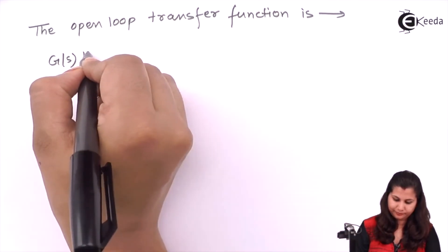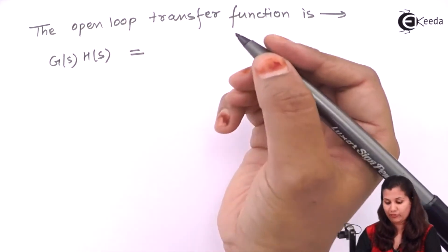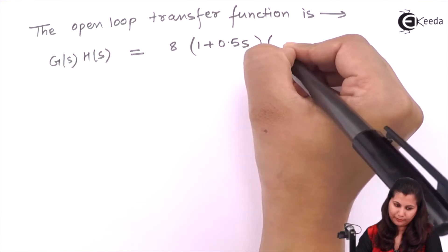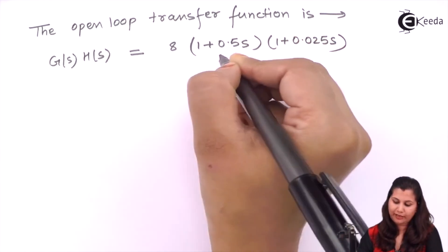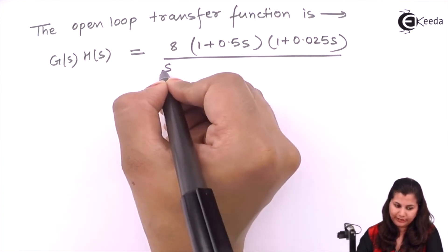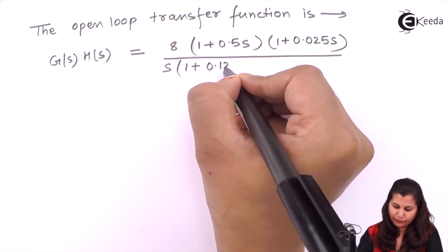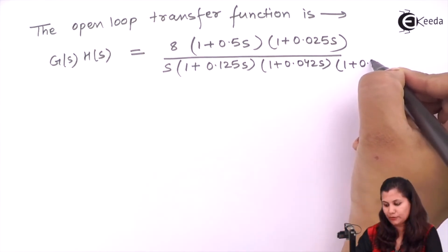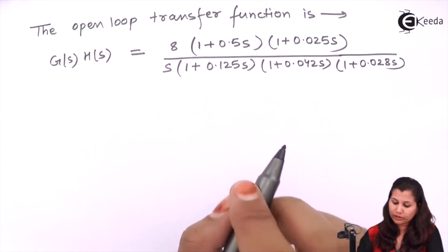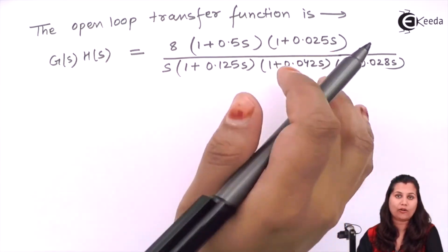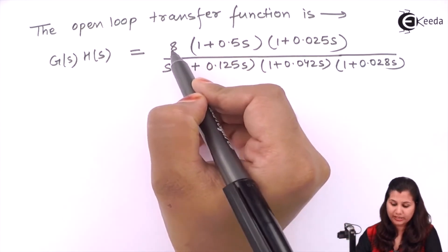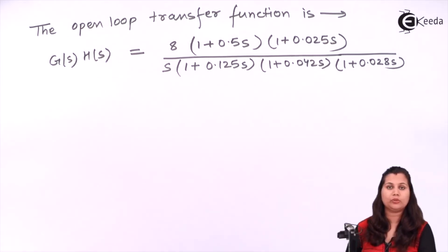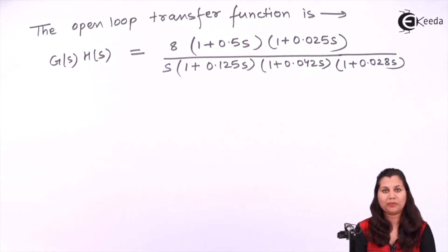The open loop transfer function G(s)H(s) is: K times the numerator factors divided by the denominator. K = 8; numerator factors are (1 + 0.5s) and (1 + 0.25s); denominator has the integral term s, and first order factors (1 + 0.125s), (1 + 0.042s), and (1 + 0.028s). In total we have 7 factors. This is how we find the transfer function of a system using the Bode plot. Thank you.